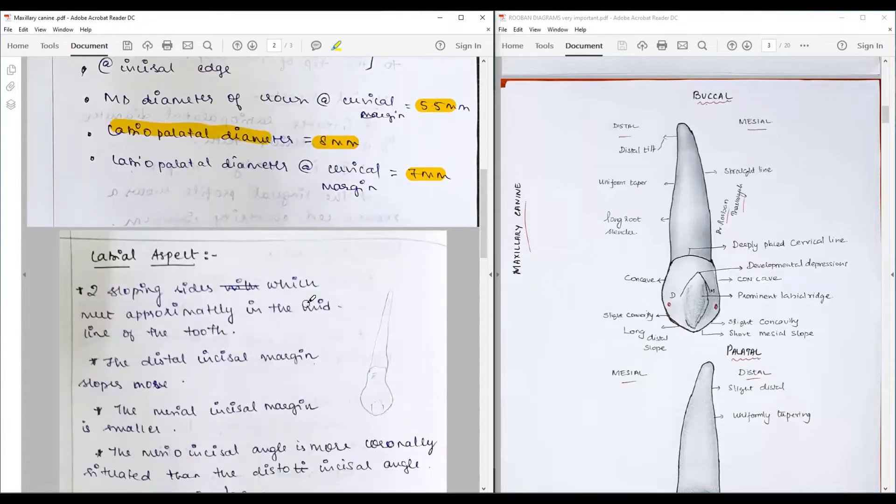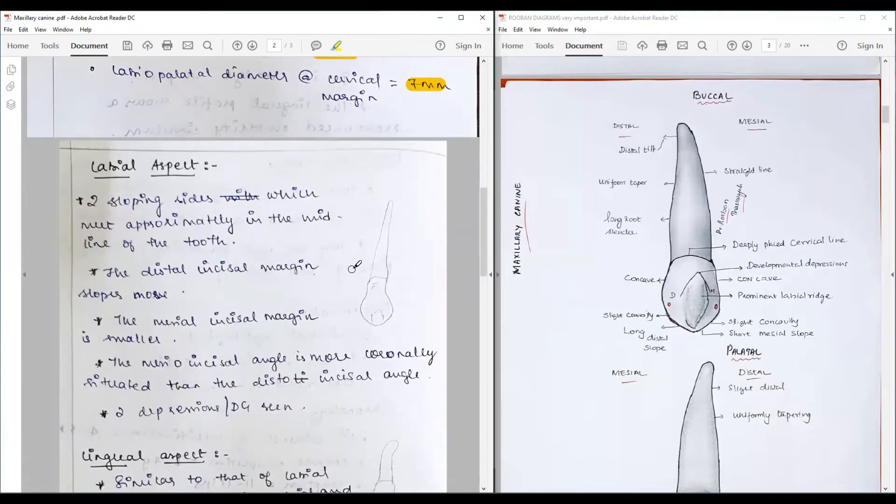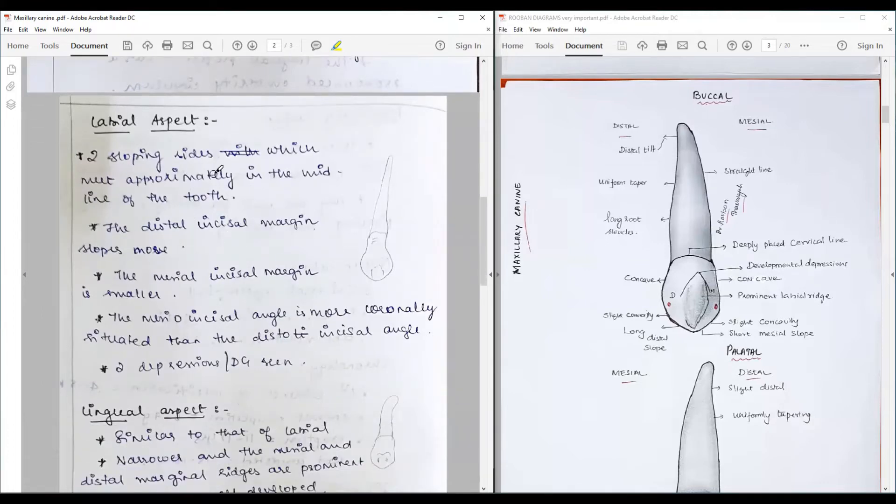Going into the individual aspects: The buccal or labial aspect has two sloping sides with a single prominent cusp. Two sloping sides meet approximately at midline of the tooth. If you ride a bisector from root tip and the cusp tip, it's approximately at the center. We have two margins forming one cusp. This is the first tooth that has a prominent cusp.